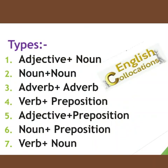What are the common types of collocations? Adjective plus noun. Noun plus noun. Adverb plus adjective. Verb plus preposition. Adjective plus preposition. Noun plus preposition. And verb plus noun. These are the types of collocations that we mostly use in our normal routine language.